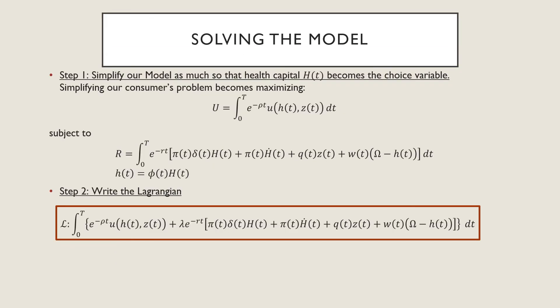Step number one is that we're going to simplify our model so that health capital becomes a choice variable. We want to see as many H's in there as possible. That comes from rearranging our time constraint and our law of motion, reshuffling what our consumer's problem is.